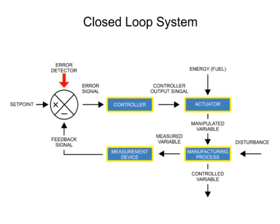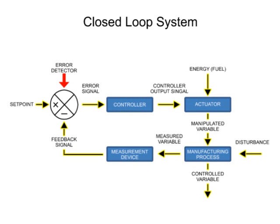Each block represents a function of the operation. Lines connecting the blocks indicate input and output signals of each function, with directional arrows indicating the process flow.